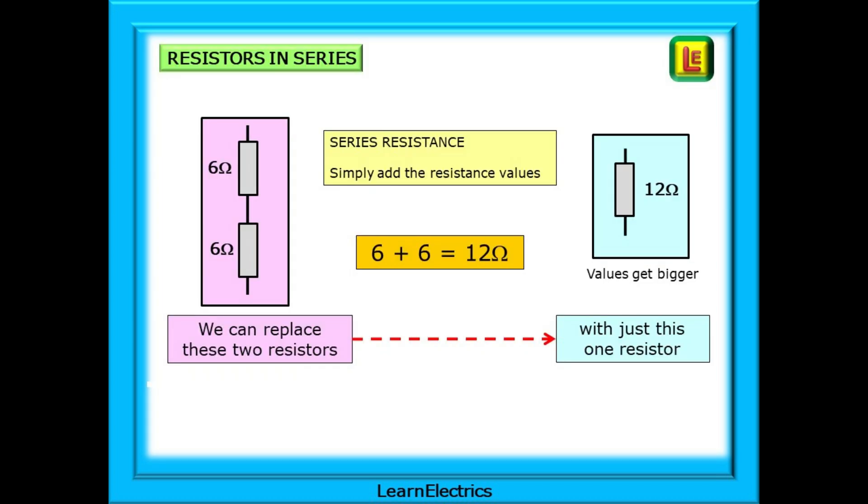We should remind ourselves about the basic rules of calculating the values of resistor combinations. With a series resistance all in a line we simply add all the values together. So the two 6 ohm resistors shown could be replaced with just one 12 ohm resistance. With all series resistances the value increases as more resistors are added. The effective resistance will always be bigger than the biggest resistors.